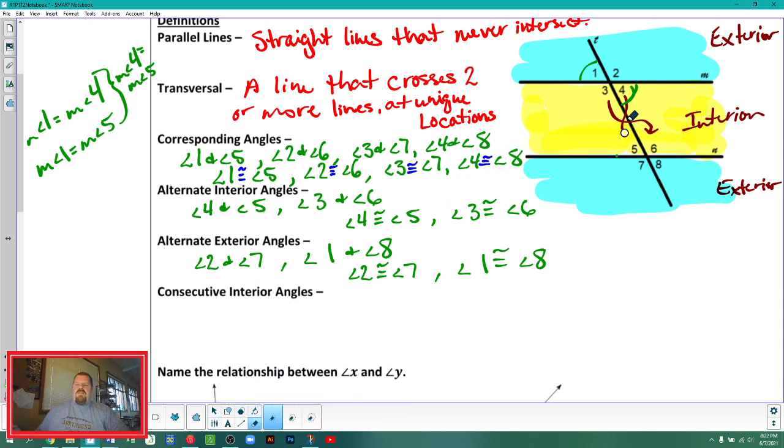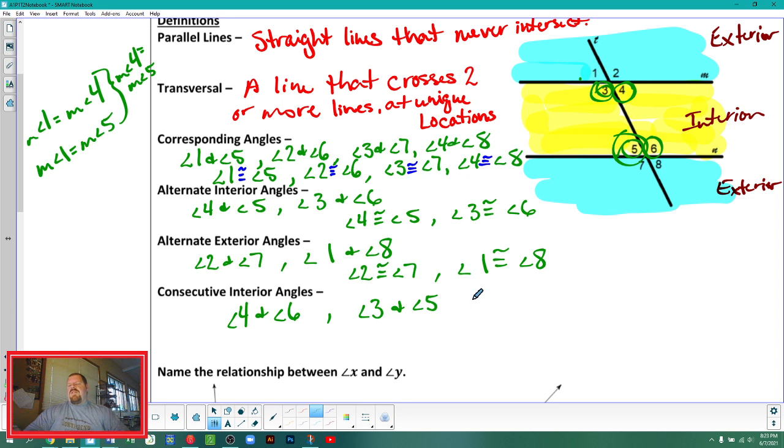And then the last one that we're going to talk about has many names. This is only one of them, one of the more common names, I would say. But what we're going to call it is consecutive interior angles. And so that's going to be two angles that are on the interior, so they're in the yellow. And consecutive. Another name for it that makes a little more sense, it's just a little more writing, is same side interior angles. Meaning they're on the same side of the transversal. So for that, I'd have angle four and angle six. And angle three and angle five. That's another set of consecutive interior angles.